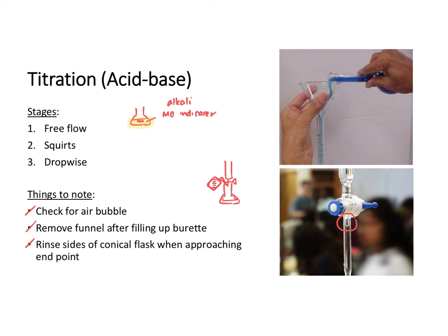Over time, the red colour will persist for longer and longer, meaning you are approaching the end point. At this stage you can no longer add squirts but must add drop by drop — open the tap very carefully to add one drop, shake the conical flask, and the colour should disappear. Continue doing so until that one drop of acid causes the solution to turn permanently from yellow to orange. The colour change is very obvious; you can check the video shown in the card.